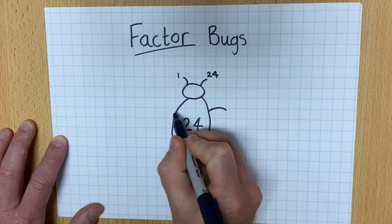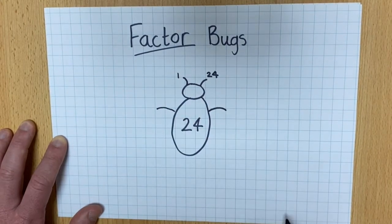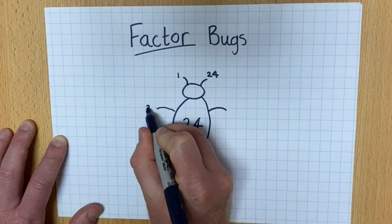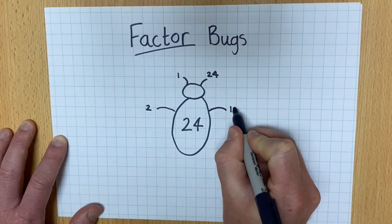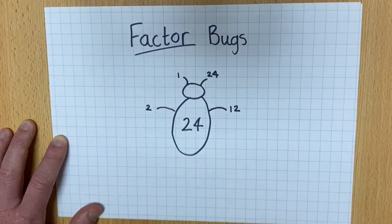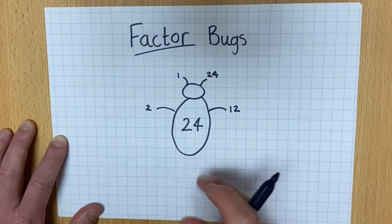Then to draw the legs, these are going to be the other factors. So I know that 2 times 12 makes 24, so 2 is a factor, 12 is a factor.